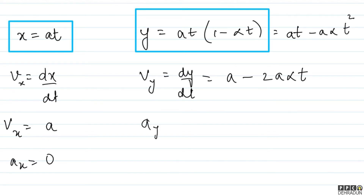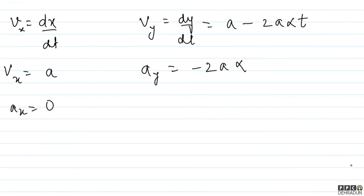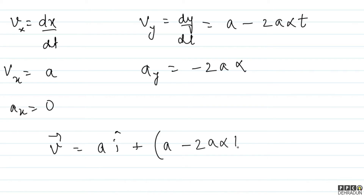Acceleration along y: Ay = dVy/dt = −2aα. So the velocity vector is V = a·î + (a − 2aαt)·ĵ, and the acceleration vector is W = −2aα·ĵ.